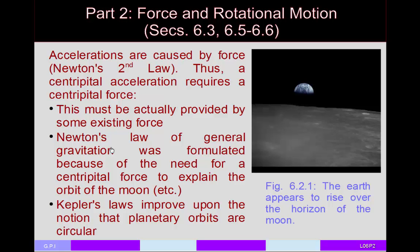Newton's law of general gravitation was actually formulated because there needed to be some centripetal force to explain the orbit of the moon and all of the planets around the Sun. Although we're not necessarily going to talk about this in today's lecture, it's worth noting that Kepler's laws improve upon the notion that planetary orbits are circular. The Copernican model had all planets moving in circular orbits, but Kepler improved this by predicting elliptical orbits — a topic for the next lecture set.